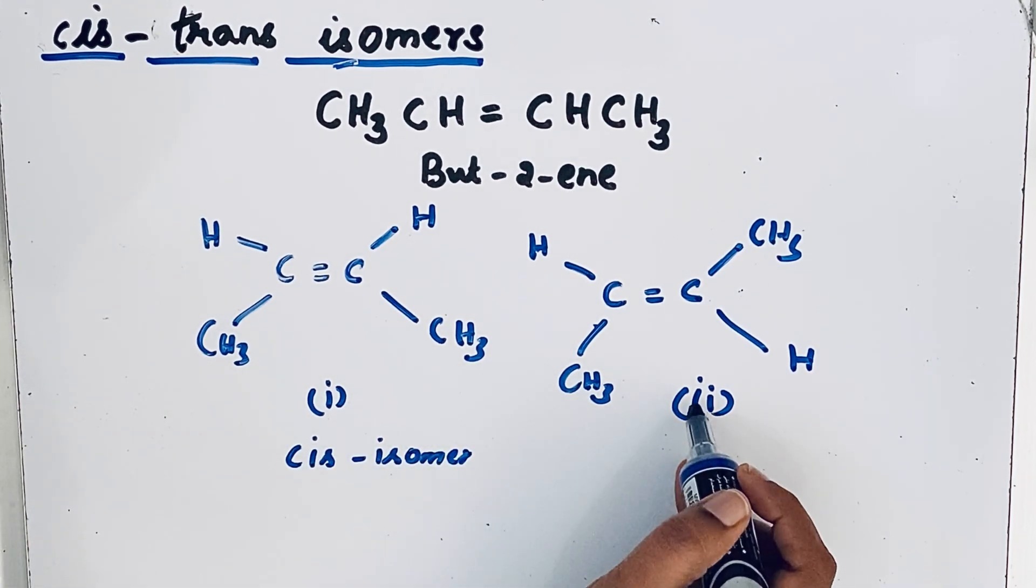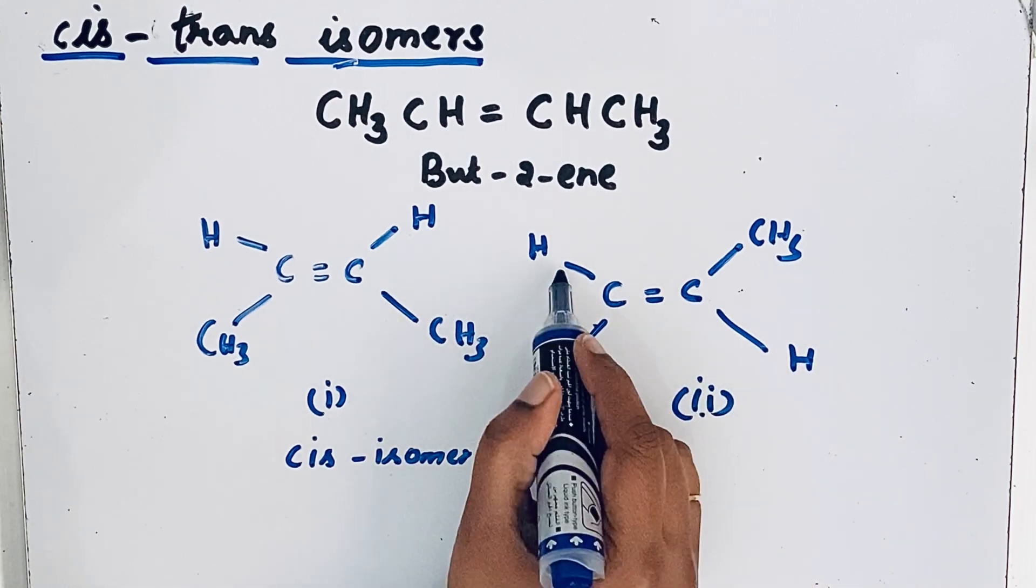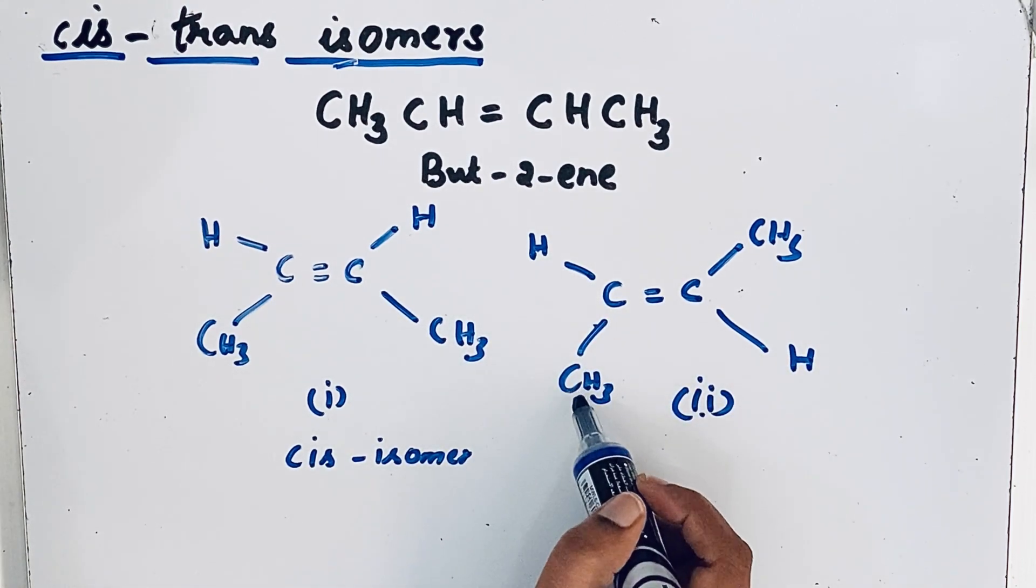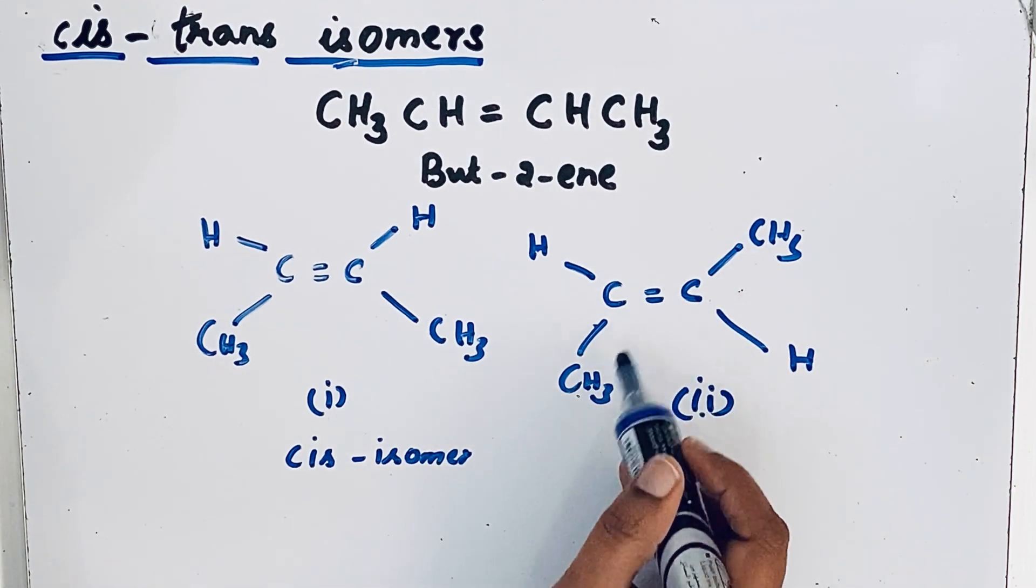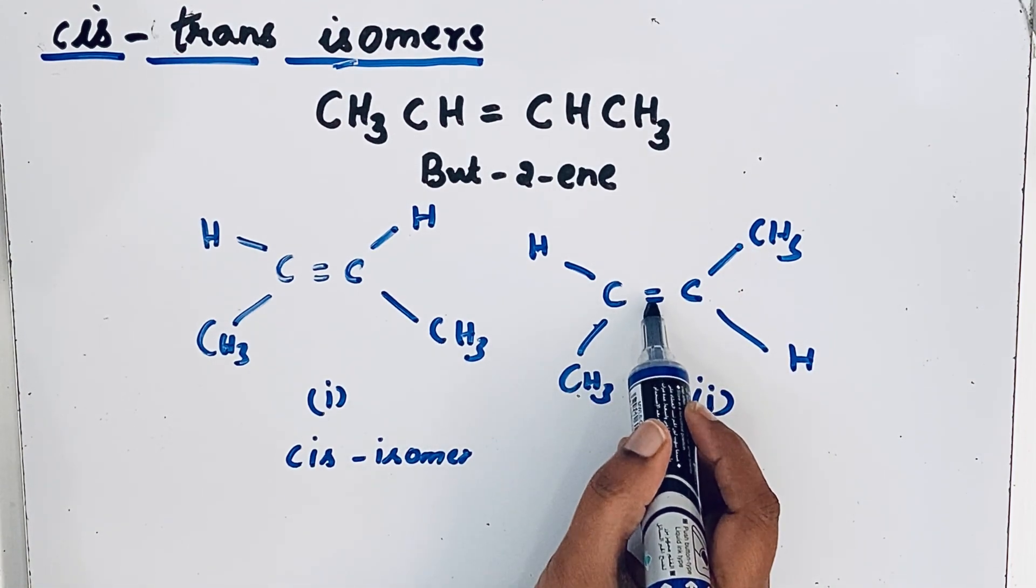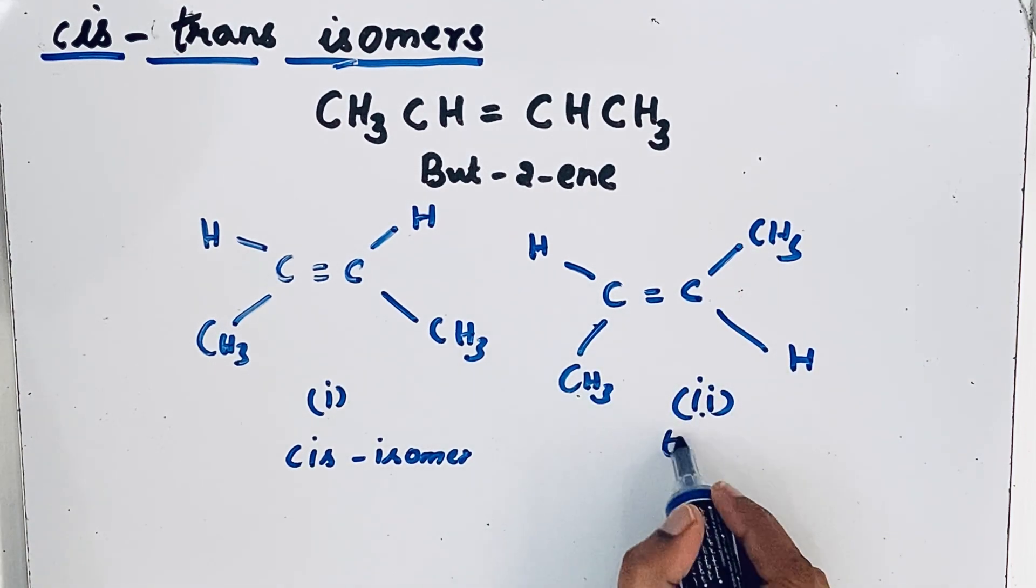If you look at the structure two, the identical atoms hydrogen atom and then here methyl group they are on the opposite side of the double bond. So this we called as trans isomer.